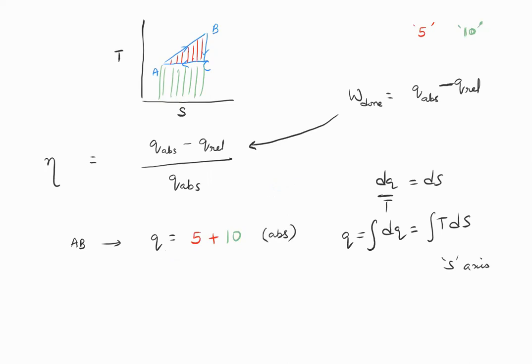Next, B to C, it's a constant entropy process, so there is no Q involved. Next, C to A: value of Q is area under the CA line, which is 10. But this time CA is decrease of entropy, so this is actually a released heat.